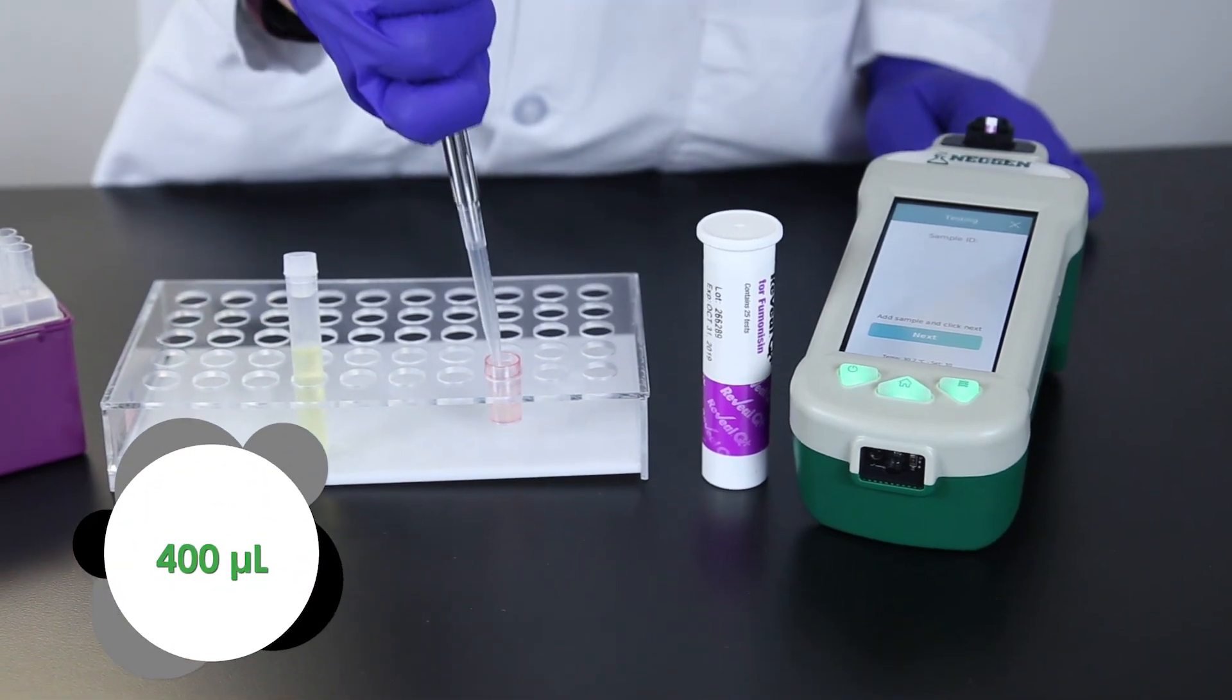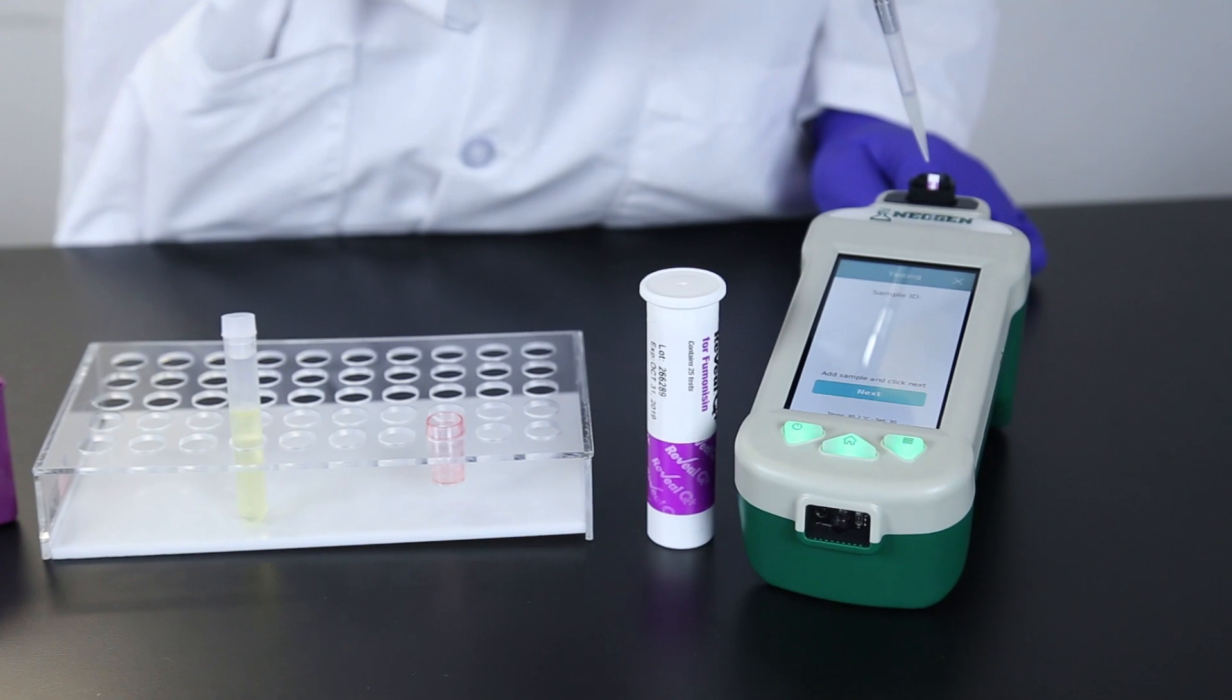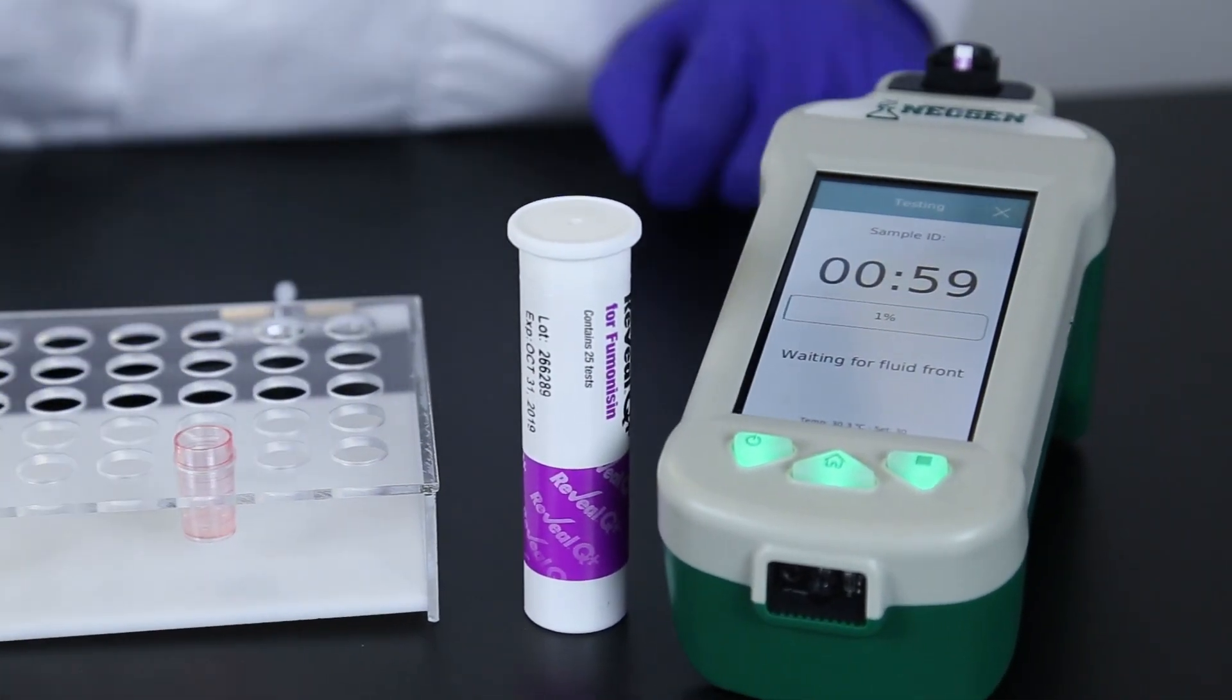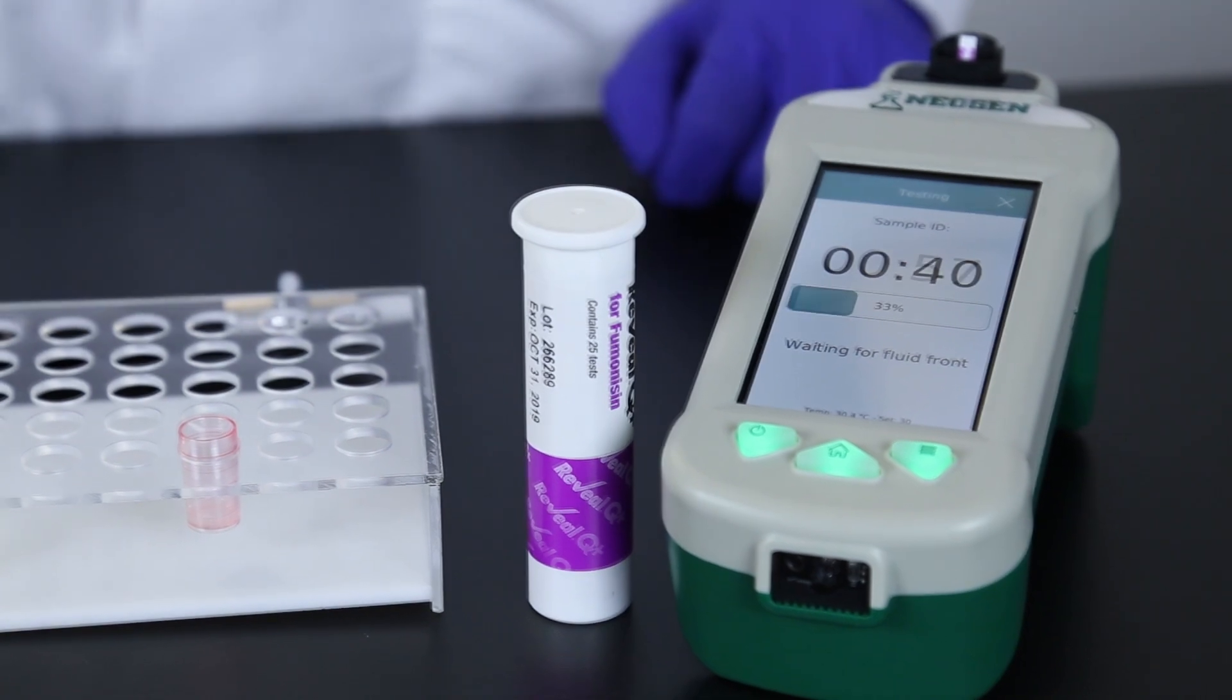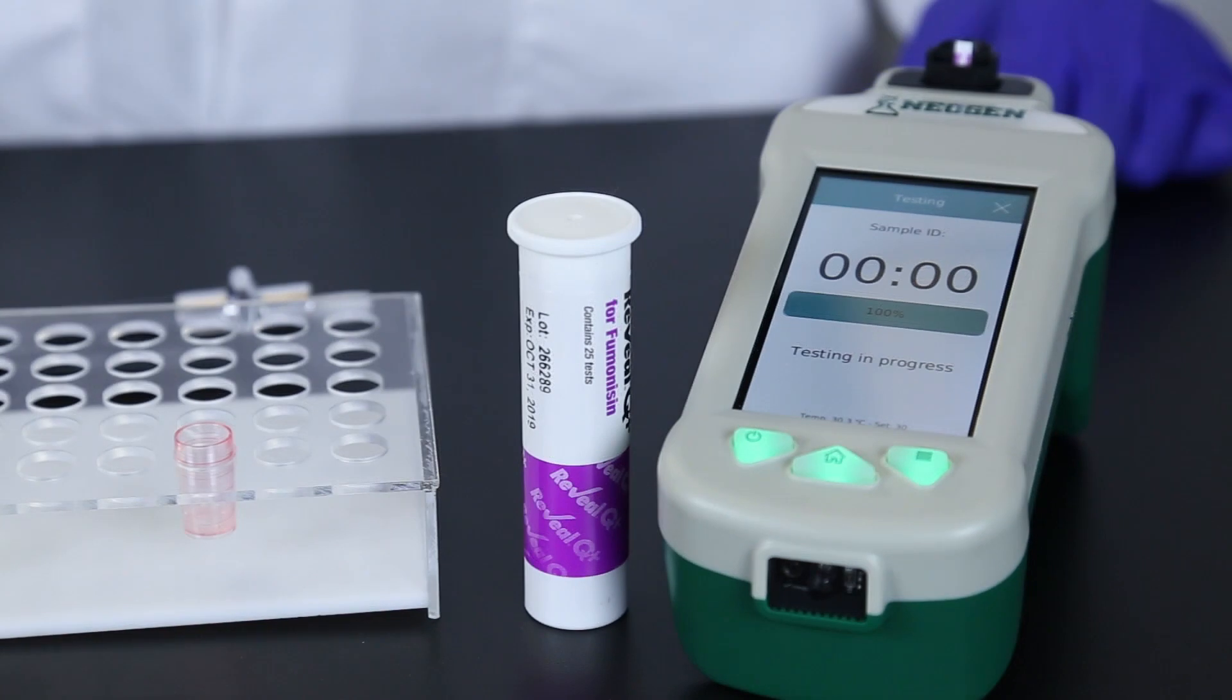Pipette 400 microliters of sample into the Raptor cartridge. The system and timer will start as soon as it detects the fluid front on the sample strip. After the six minute testing time, the Raptor displays your results.